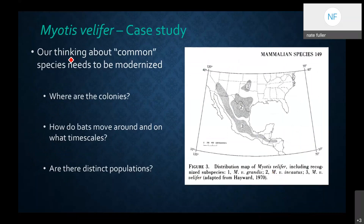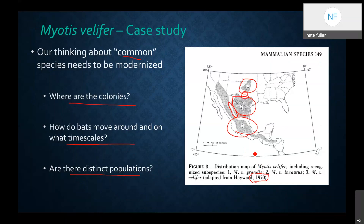One of the problems we face is that our thinking about what are the common species of bats really needs to be modernized. We don't know where the colonies are, where the bats are moving, or anything about their population structure. An old account from the 1970s suggests there are three subspecies of Myotis vellifer in North America with geographic divisions that are completely imaginary to me — not biologically relevant, as any individual bat could cross those boundaries during migration. We really need to understand more in depth how bats are moving across the landscape, sharing genes and pathogens from one population to another, and whether northern bat populations will be as heavily affected by white-nose syndrome.